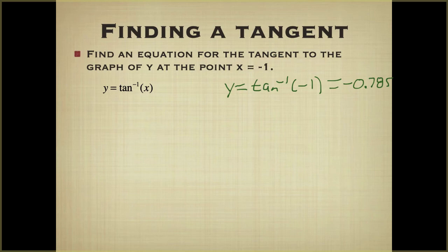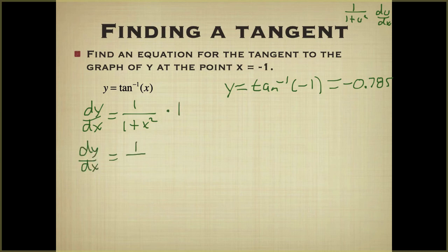We have our function. Let's do our derivative now so we can find our slope. So dy dx is, using our formula, it's 1 over 1 plus u squared du dx. That's how we find the tangent inverse. So 1 over 1 plus x squared. And the derivative of x is just 1. I'm just going to make this look a little better: 1 over 1 plus x squared.